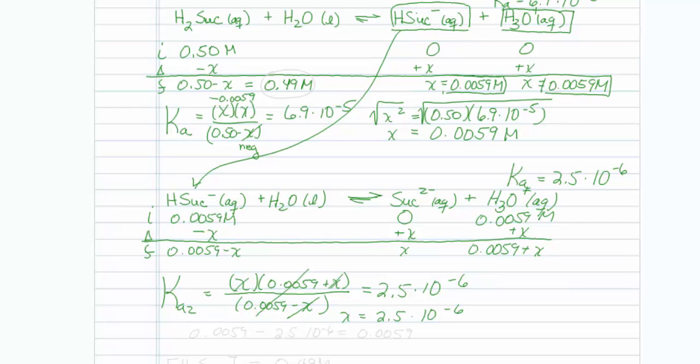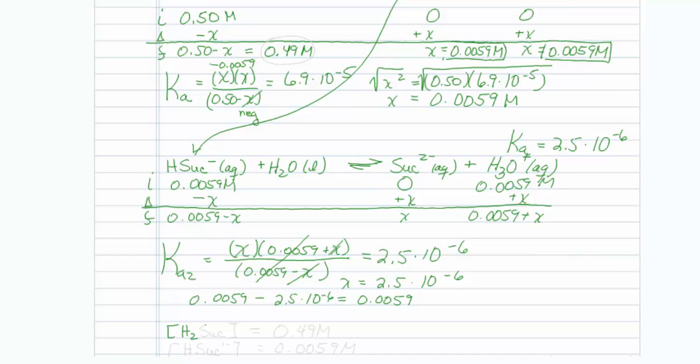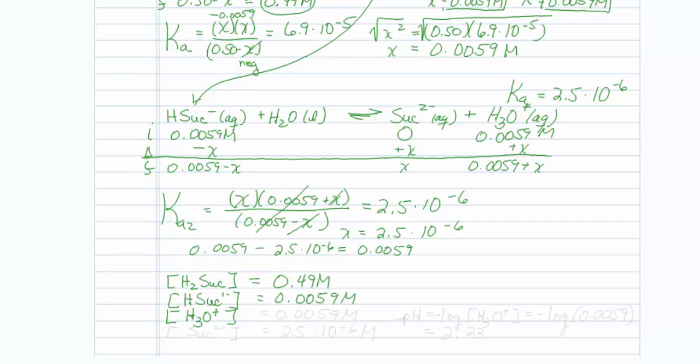And certainly my suggestion that it's negligible is correct, because 0.0059 minus 2.5 times 10 to the minus 6 is still equal to 0.0059. So now to outline what are the answers to my questions. The concentrations of all species. H2 succinate is going to be equal to the value from the first equilibrium table, 0.49 molar. My H succinate deprotonated once is going to be equal to 0.0059 molar. My hydronium is also going to be equal to 0.0059 molar. And finally, the completely deprotonated material is going to be equal to 2.5 times 10 to the minus 6 molar.